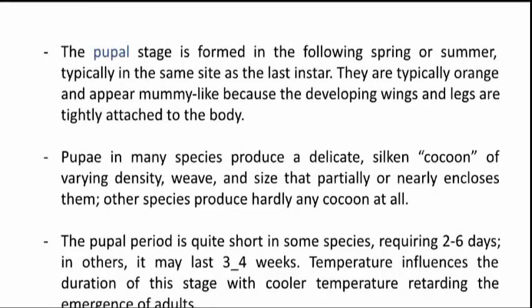The pupal stage is formed in the following spring or summer, typically in the same site as the last instar. They are typically orange and appear mummy-like because the developing wings and legs are tightly attached to the body. Pupae in many species produce a delicate silk cocoon of varying density, width, and size that encloses them, while other species produce hardly any cocoon at all. The pupal period is quite short in some species, requiring 2 to 6 days; in others it may last 3 to 4 weeks. Temperature influences the duration of this stage, with cooler temperatures retarding the emergence of adults.